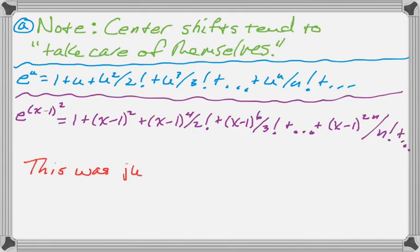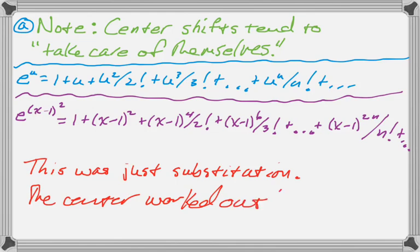And that's it. There was nothing to be done in this problem other than to write down the series for e and then replace everything with the quantity x minus 1 squared. So the center just worked out. We didn't have to really worry about that, even though it seemed like it might be worrisome.